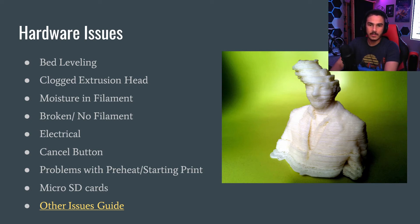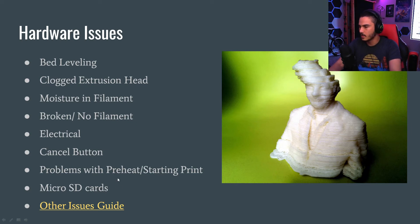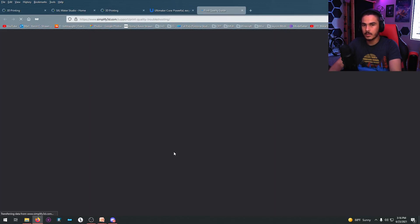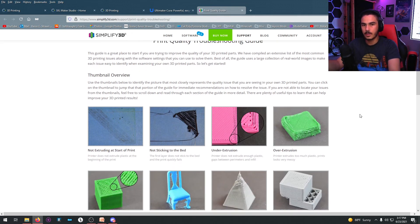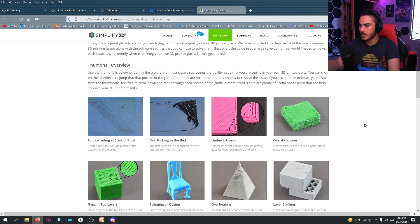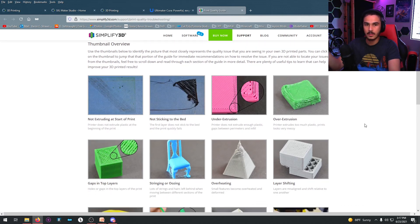Common hardware issues are bed leveling, the extrusion head being clogged, the filament being moist, the filament being broken with nothing in it, and electrical and other problems. If you ever have a print that looks like a Van Gogh on the side, you can click on this link and it will bring you to a website on Simplify3D. It's a great website because it shows you a picture of every issue there could be and tells you what's causing it and what you can do to fix it.